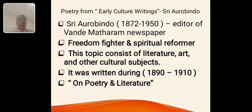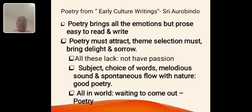The next prose, Poetry, is an extract from Aurobindo's early cultural writings. Aurobindo was born in the year 1872 and died in 1950. He is a multi-talented person and was also editor of the Vande Mataram newspaper. He was a freedom fighter, spiritual reformer, and saint. This topic covers literature, art, and other cultural subjects dealt with in his early cultural writings. The collection was written during the years 1890 to 1910. In Poetry and Literature, he discussed that poetry is very important — it brings all kinds of emotions and must attract, delight, or bring sorrow to the readers. Writing good poetry is not an easy task, and he discussed what qualities a good poem should have.